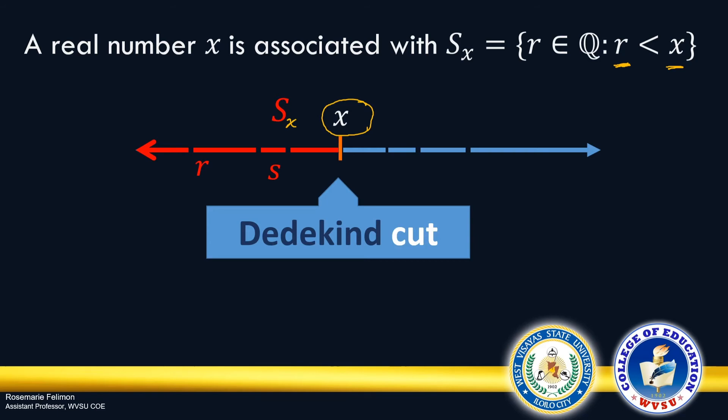So this is a very good definition of a real number, because it clearly shows the inclusion of rational and irrational numbers.